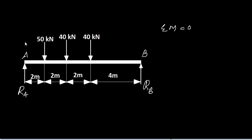The 50 kN acts downward, creating a clockwise moment — therefore negative. The 40 kN also acts downward — clockwise, so negative. The other 40 kN is again negative. RB acts upward, creating a counterclockwise moment — therefore positive — at a distance of 10m. Taking all negative terms to the other side of the equation: 10·RB = 50×2 + 40×4 + 40×6.